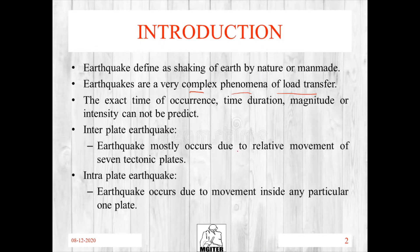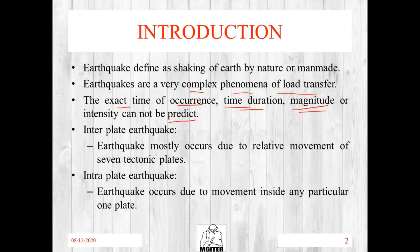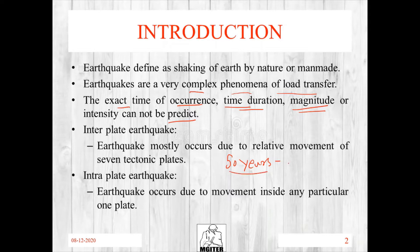We cannot predict the exact time of occurrence, time duration, and magnitude of an earthquake. You can predict that an earthquake will occur in two to three years, but you cannot predict the exact time, duration, or magnitude. You cannot say an earthquake will occur tomorrow morning with a magnitude of seven or eight. Similarly, if you build a building for 50 years, you cannot predict how many earthquakes it will resist in that period.